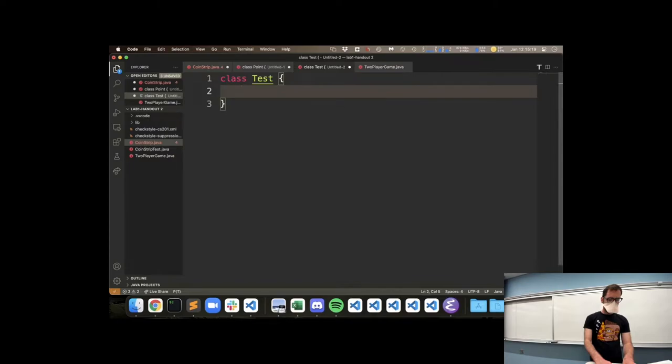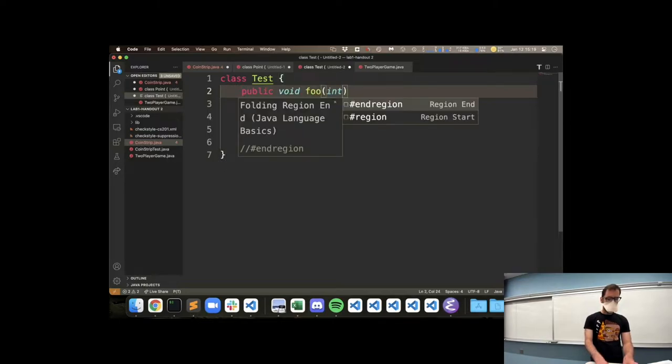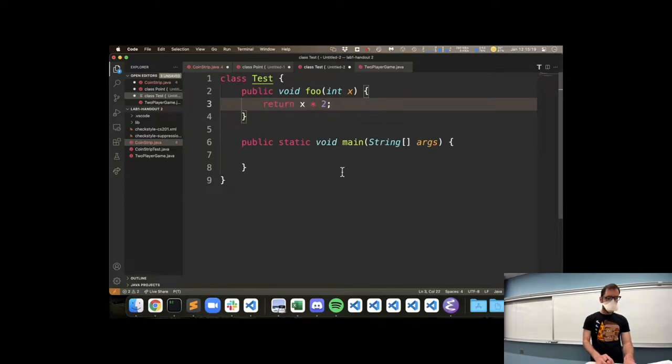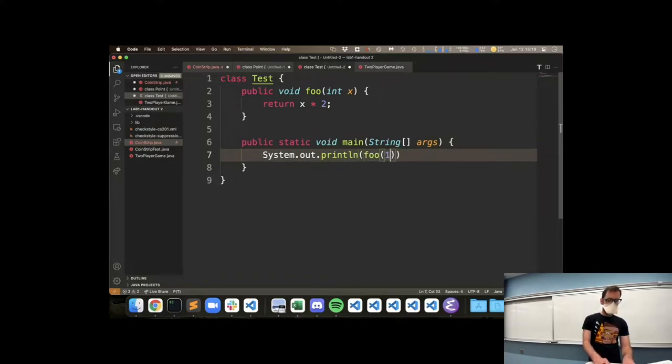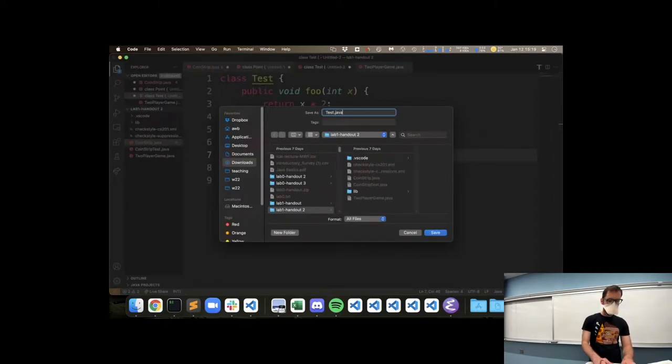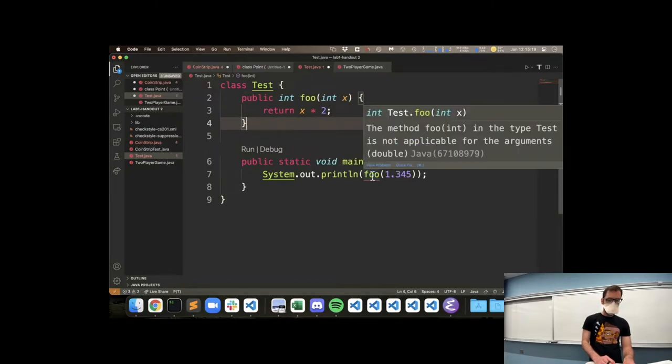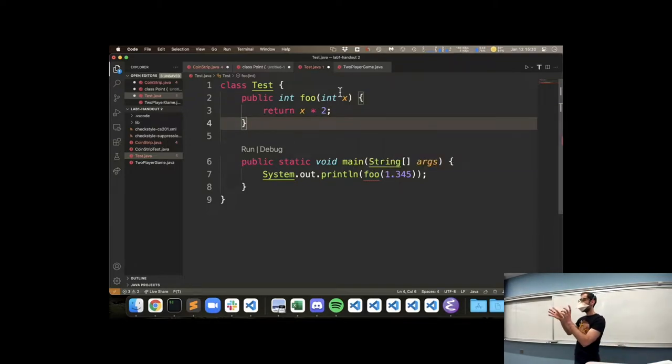So if I make a test class and I make a main method and another method foo that takes in a long, return x times 2, and then what if I was trying to print foo of 1.345. It is giving me, oh let's make this an int, it is saying I can't give it a double where it wants an int.